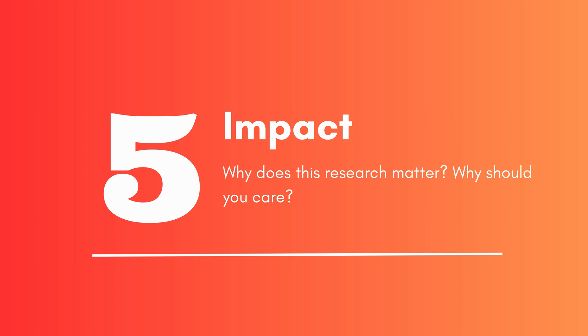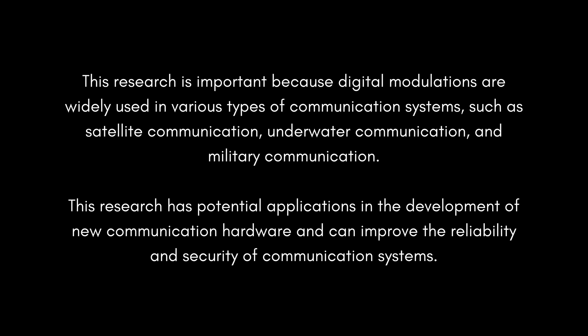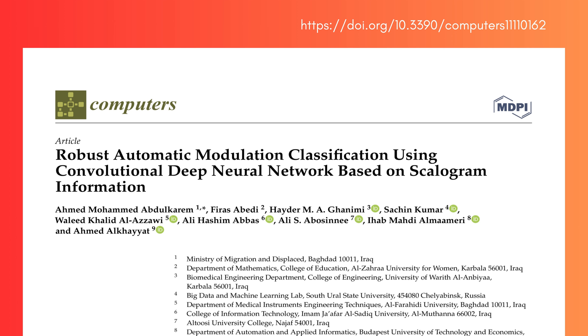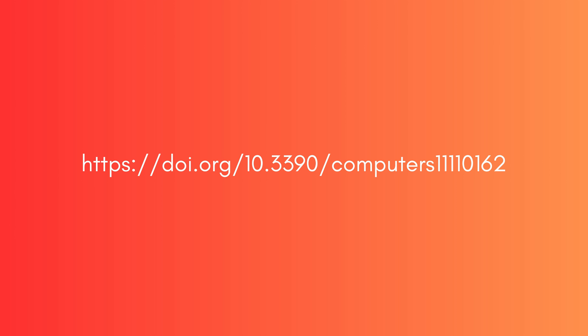Why does this research matter? This research is important because digital modulations are widely used in various types of communication systems such as satellite communication, underwater communication, and military communication. This research has potential applications in the development of new communications hardware and can improve the reliability and security of communication systems. The full paper can be found at DOI 10.3390/computers11110162.